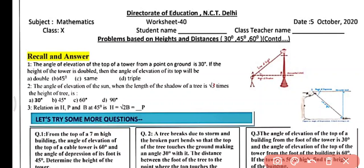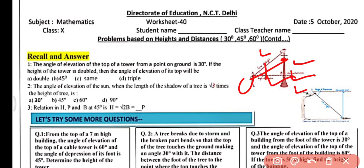When a person is looking upward, you can see on the screen: this is the line of sight, this is the horizontal line, and this angle will be the angle of elevation. Similarly, if a person is standing and looking downward, the angle between the horizontal line and line of sight will be the angle of depression.